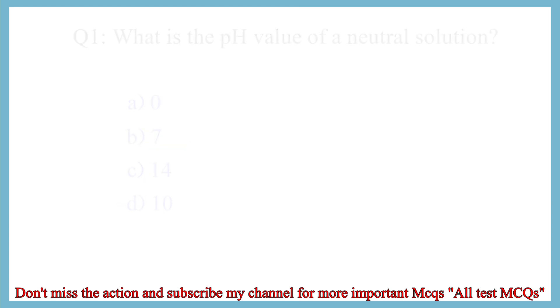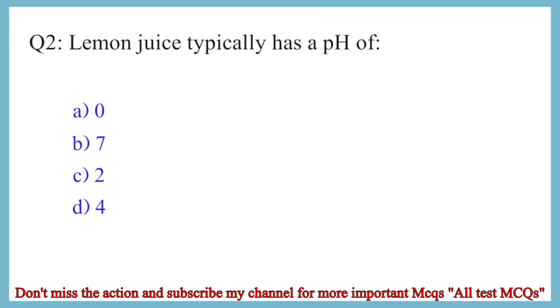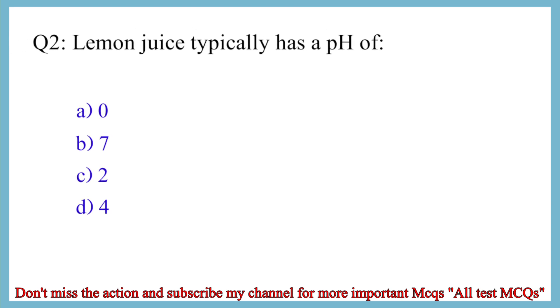Question No. 2. Lemon juice typically has a pH of? The correct answer is option C: 2.